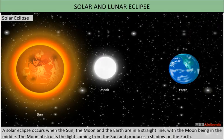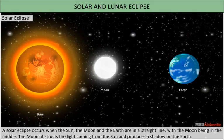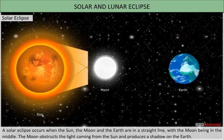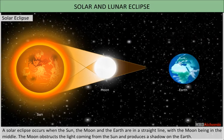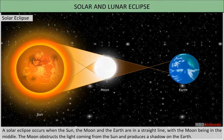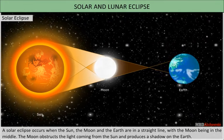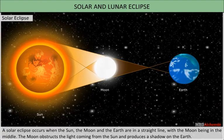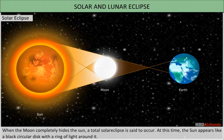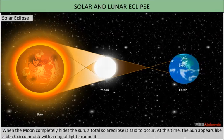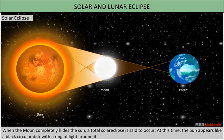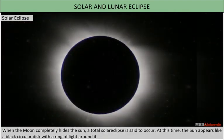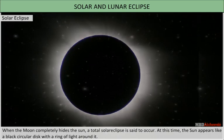Solar eclipse. A solar eclipse occurs when the sun, the moon, and the earth are in a straight line, with the moon being in the middle. The moon obstructs the light coming from the sun and produces a shadow on the earth. When the moon completely hides the sun, a total solar eclipse is said to occur. At this time, the sun appears like a black circular disk with a ring of light around it.